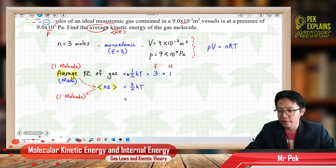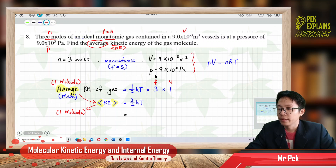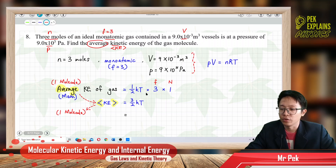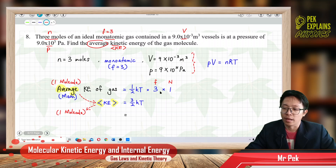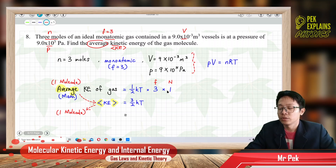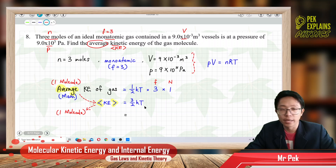Start with the energy for one degree of freedom: ½KT. This is a monoatomic gas, and monoatomic gas only has 3 degrees of freedom, so you multiply by 3. The question asks for average kinetic energy — kinetic energy for only one molecule — so you times by 1. After you multiply, you get (3/2)KT.